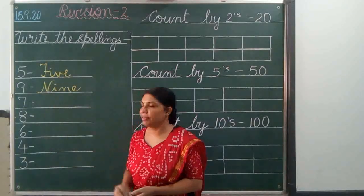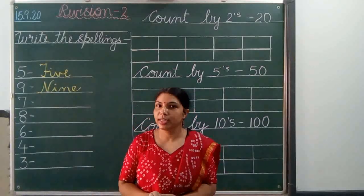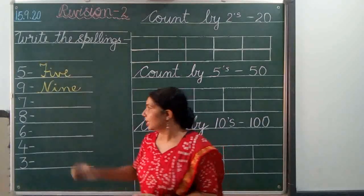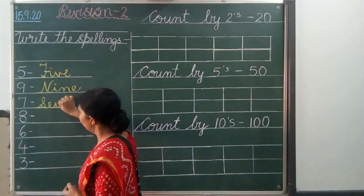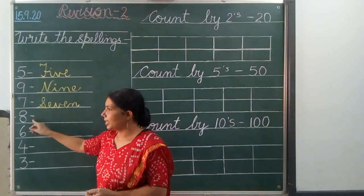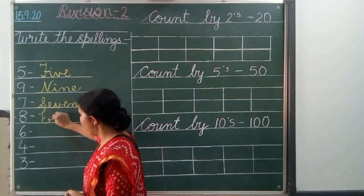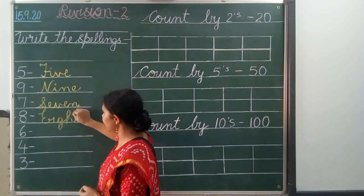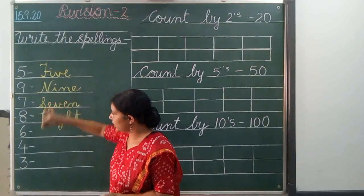Next is 7. What is the spelling of 7? You know? S-E-V-E-N, 7. Let us write S-E-V-E-N, 7. It is 8. E-I-G-H-T, 8.